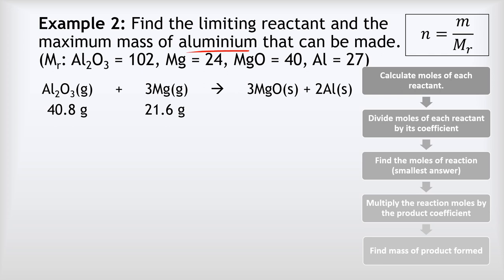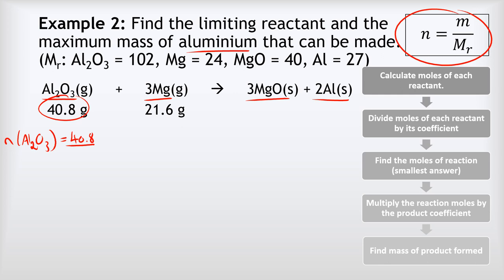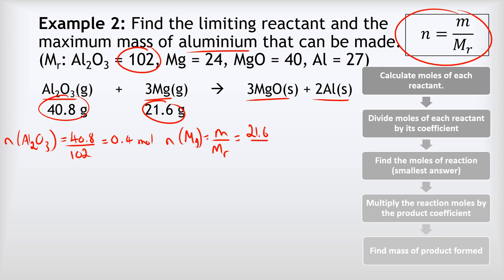Example two: find the limiting reactant and the maximum mass of aluminium that can be made from the reaction where 40.8 grams of Al2O3 reacts with 21.6 grams of Mg to make 3MgO and 2Al. Starting with moles: moles of Al2O3 = 40.8 / 102 = 0.4 moles. Moles of Mg = 21.6 / 24 = 0.9 moles of magnesium.